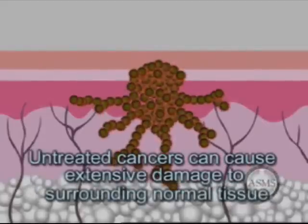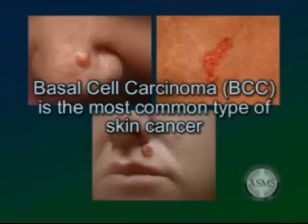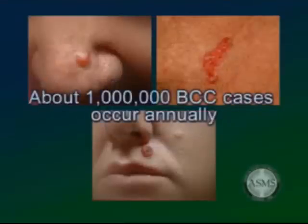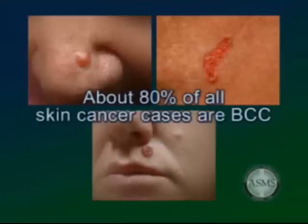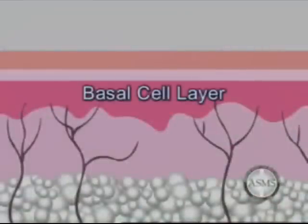Fortunately, metastasis of skin cancer is not common. Basal cell carcinoma (BCC) is the most common type of skin cancer in the United States. Approximately 1 million cases of BCC occur annually — about 80% of all skin cancer cases are BCC. It is the slowest growing and least dangerous of the three common types of skin cancer, and it rarely metastasizes.